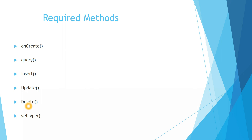delete() is used to delete a particular row or column, and again it will return the number of rows deleted. getType() is used to return the MIME type for the corresponding content URI.